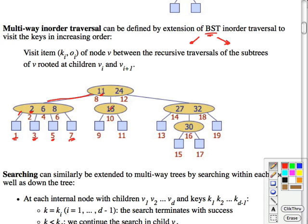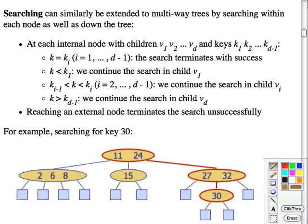As you can see the numbering here, that's the eighth one visited, and so on. So that's a generalization of the in-order traversal to these multiway trees. And we can generalize searching in a similar manner.